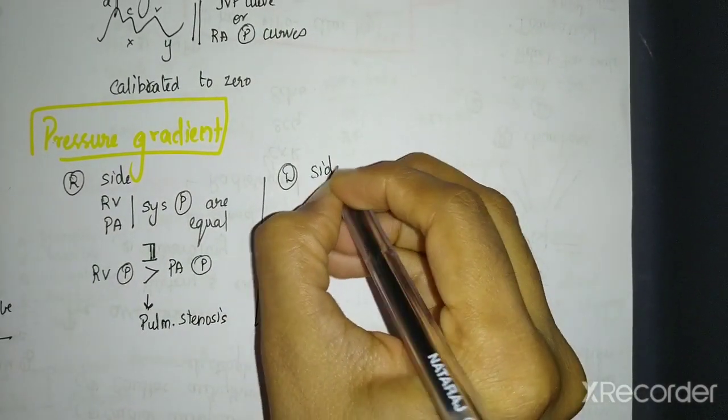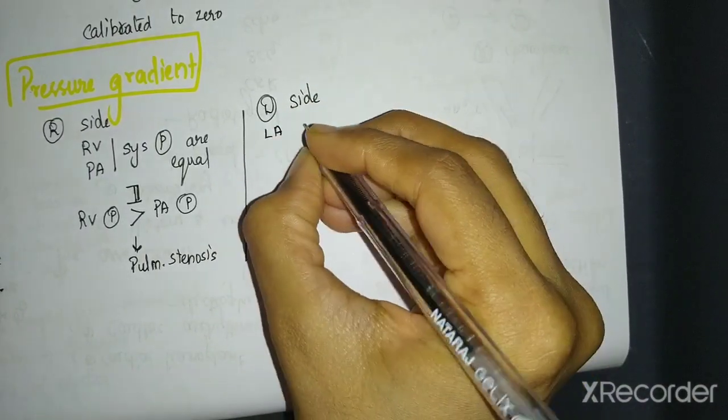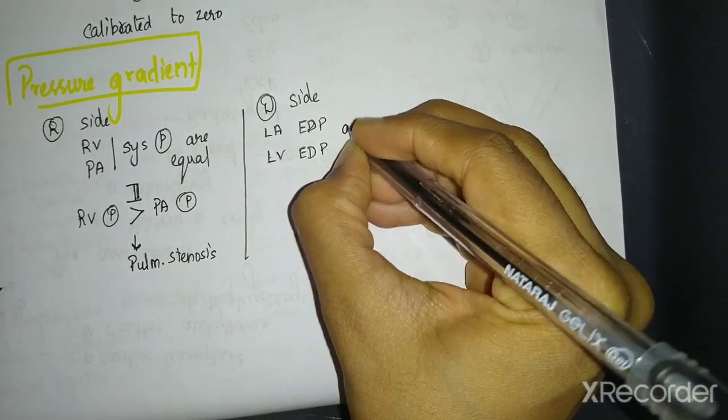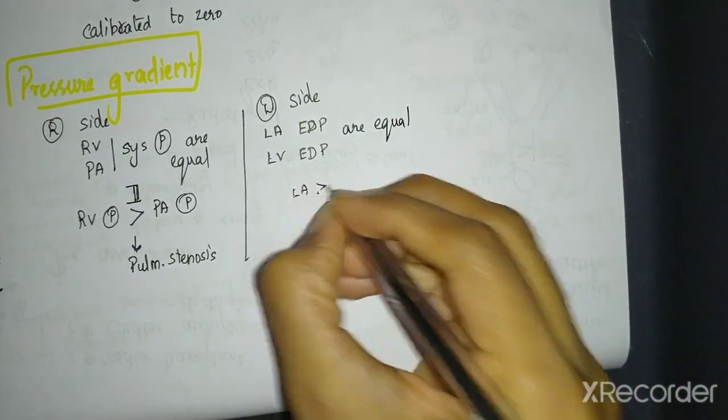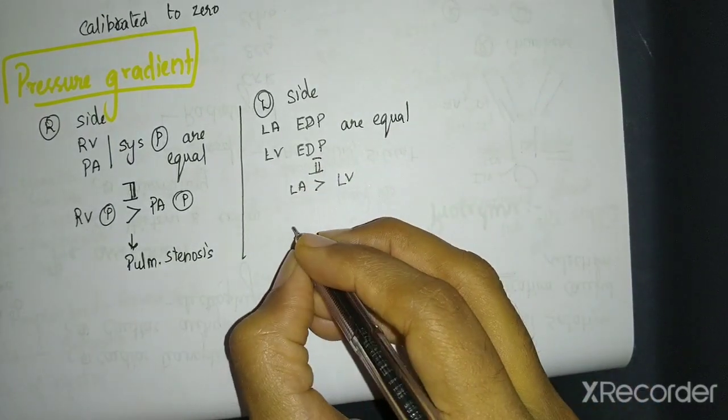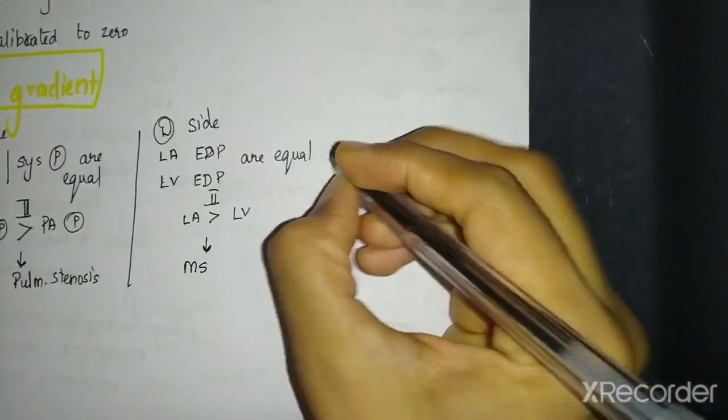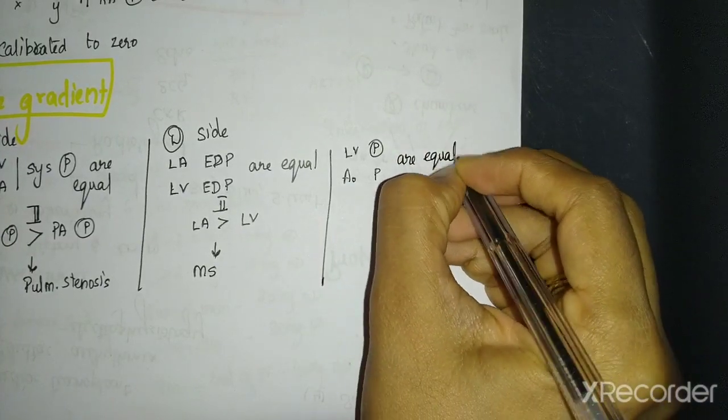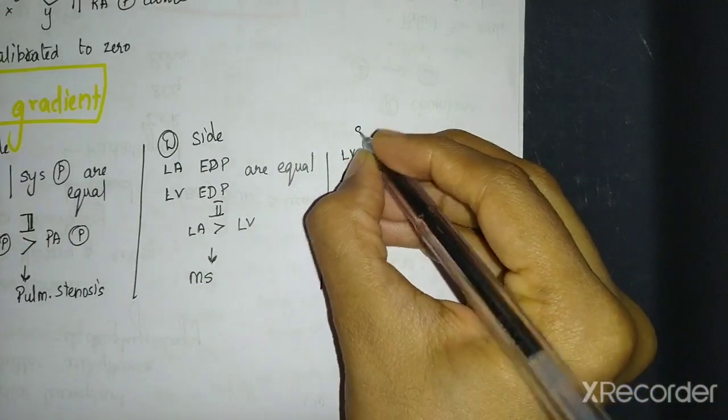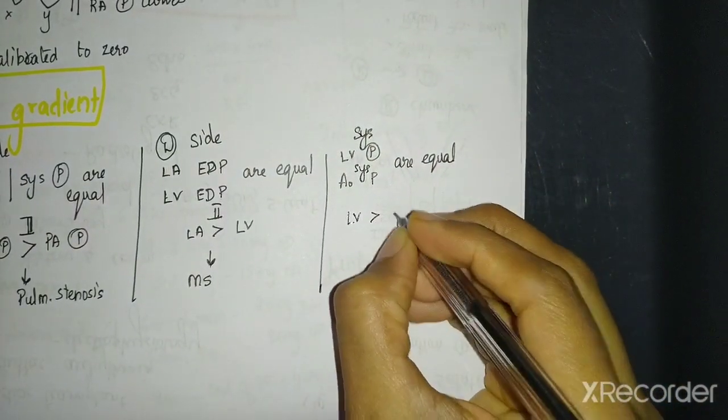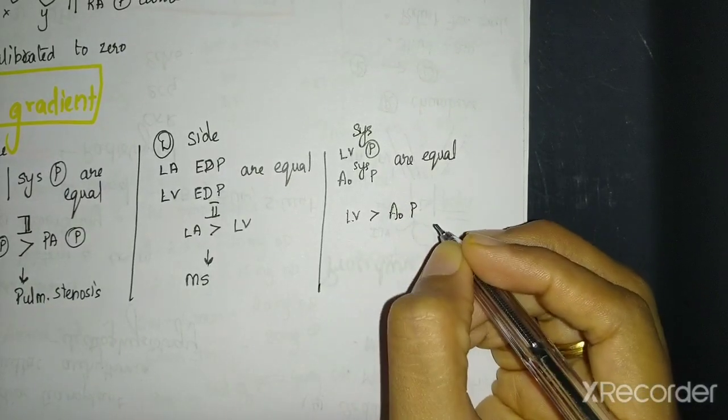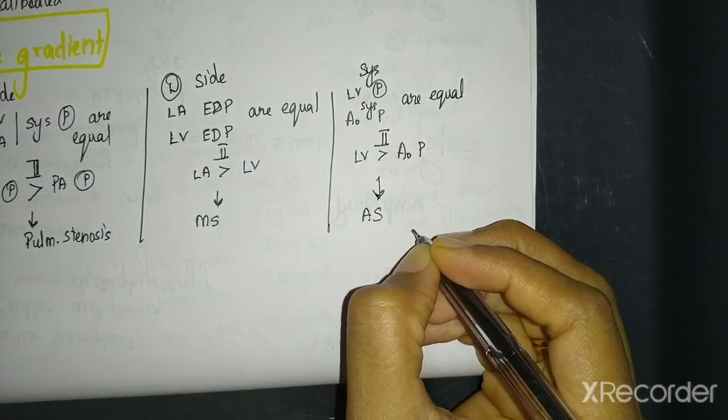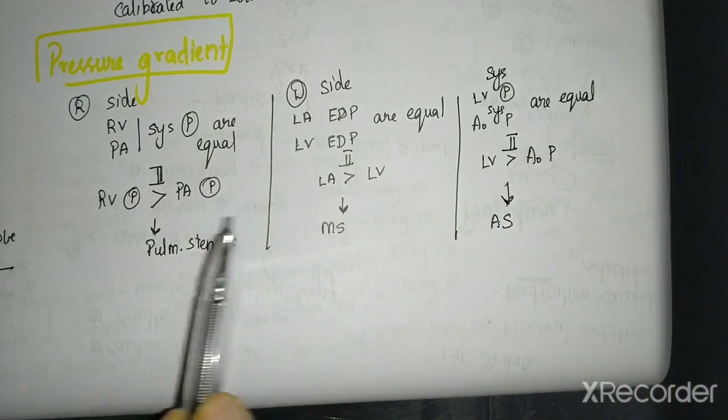What about left side? In left side, if you see, left atrial end diastolic pressure and left ventricular end diastolic pressure are equal. If left atrium is more than that of left ventricle, what happens? There is a block between the two. So you are thinking of mitral stenosis. Similarly, left ventricular pressure and aortic pressures are equal. By pressure, I mean systolic pressure. So if left ventricular pressure is more than aortic pressure, now you are getting what I am trying to tell. So there is a block between left ventricle and aorta and it is usually aortic stenosis. So it will go on. This pressure gradient will tell you where the probable block is.